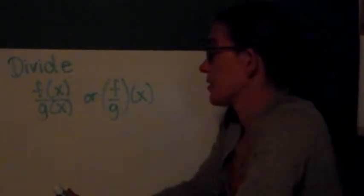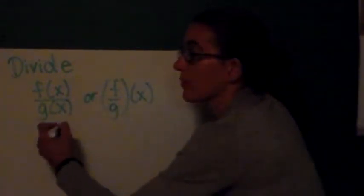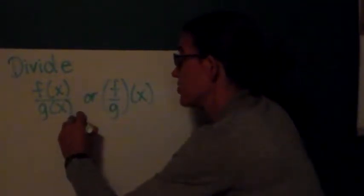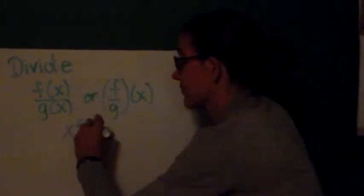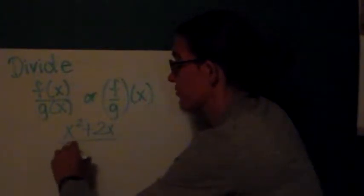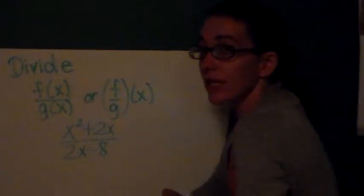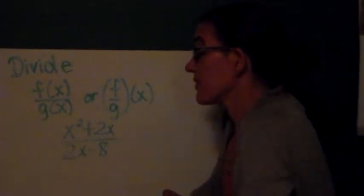Our final operation is division. So, we can write this as a ratio either of the two functions, or we can write (f/g)(x). So, generally what I'm going to be asking you to do is to just write that ratio. (x² + 2x) divided by (2x - 8). So, as I look at this, I notice that, as usual, I've come across a problem because now I have a rational function.